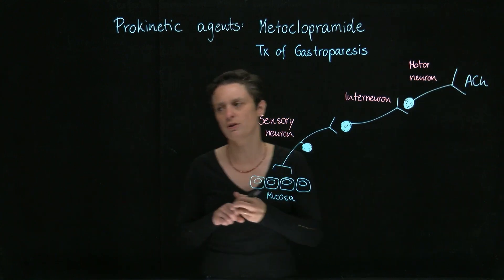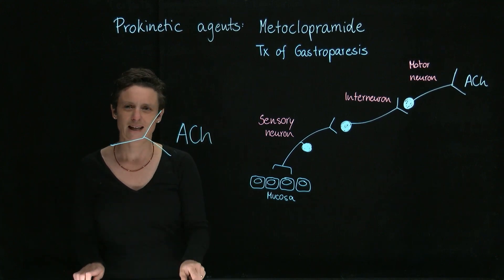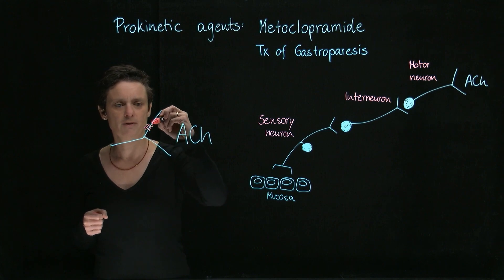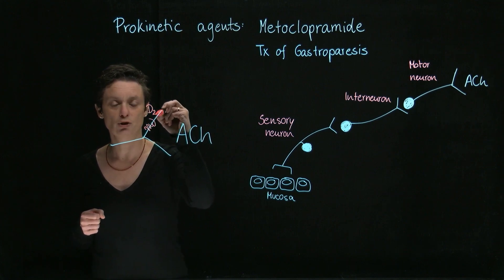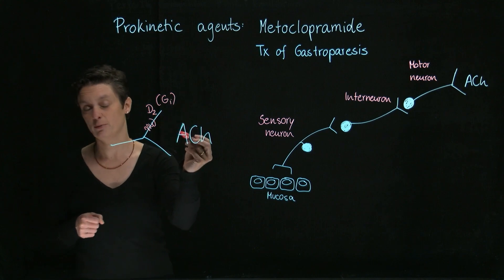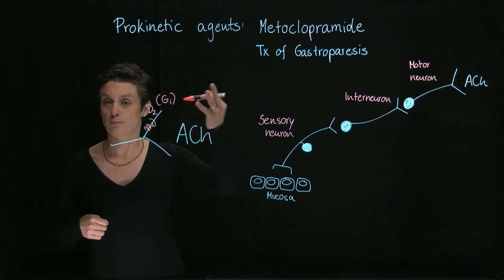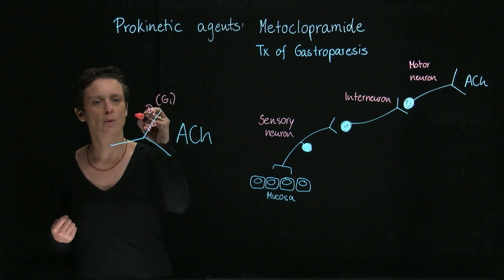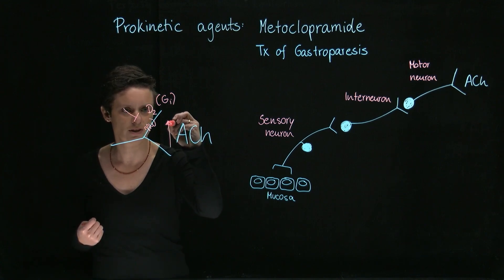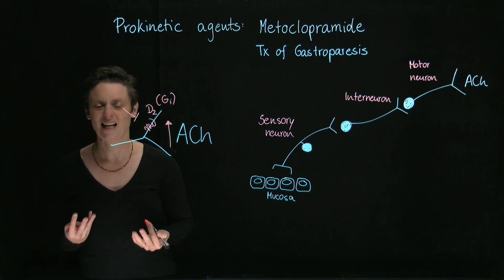Let's zoom in on the neuron that releases acetylcholine. What we find on this neuron are presynaptic receptors. One very important receptor found in the GI tract is the dopamine D2 receptor. The D2 receptor is Gi-coupled, so if you stimulate it, you get a decrease in acetylcholine. To use drugs that facilitate the release of acetylcholine, we actually need to block this receptor.